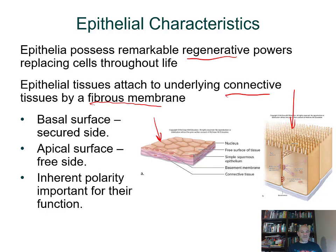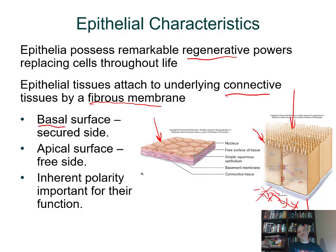Some epithelial cells are very thin and flat; others are larger and more column-shaped. Both the free (apical) side and the attached (basal) side are important. The attached side connects via the basement membrane, which is formed by secretions from both the epithelial tissue above and the fibrous connective tissue below. Together they secrete materials that make the basement membrane, helping to glue the epithelia in place.